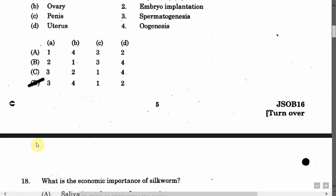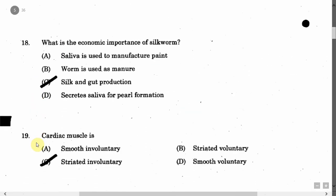The next question is: What is the economic importance of silkworm? Option A: Saliva is used to manufacture paint. Option B: Worm is used as manure. Option C: Silk and gut production. Option D: Secret saliva for pulp formation. The correct answer is Option C, that is silk and gut production.